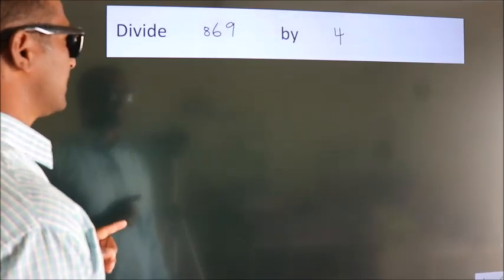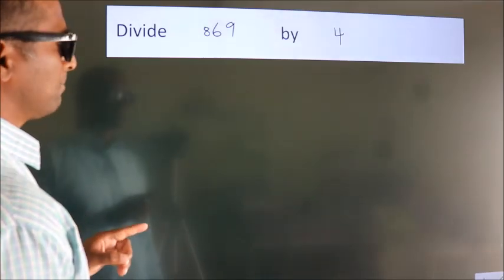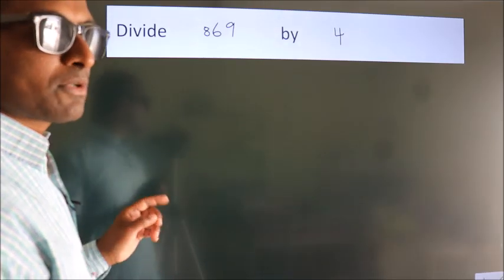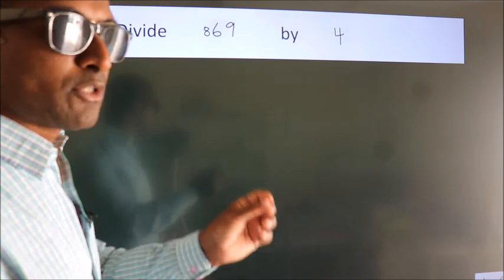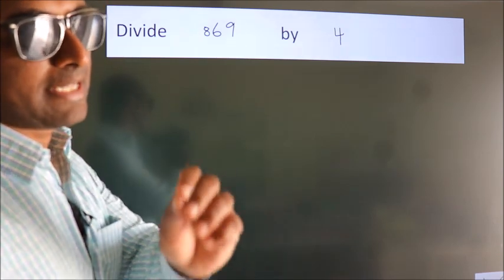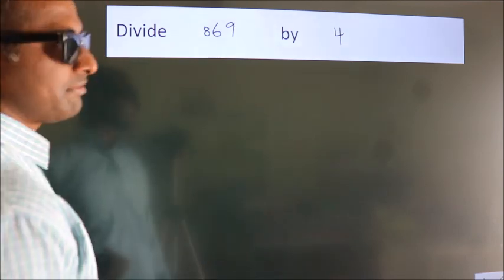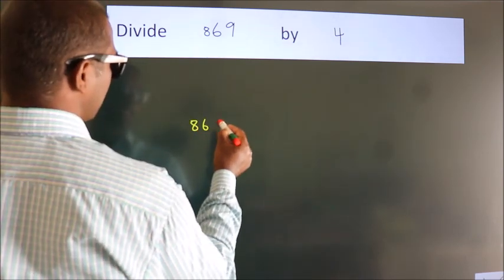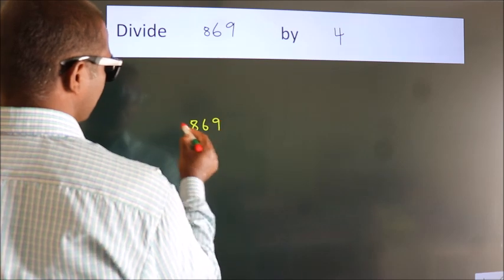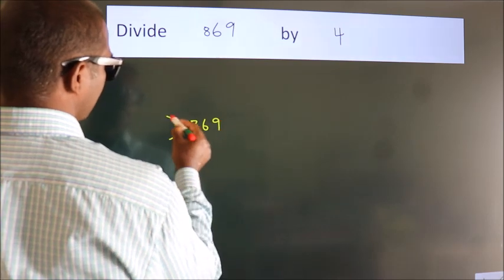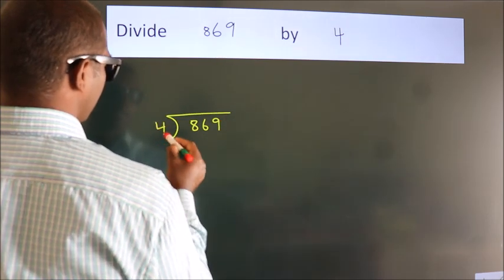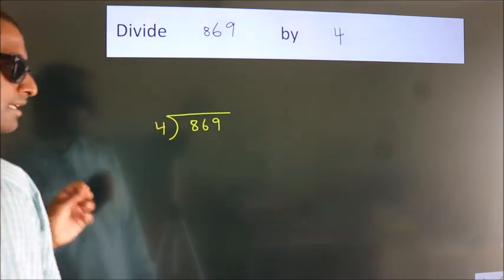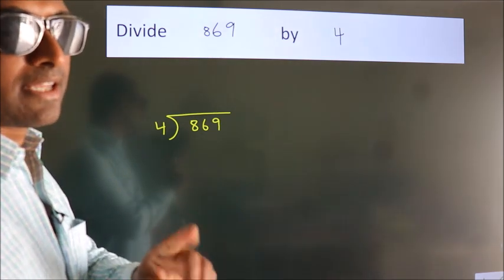Divide 869 by 4. To do this division, we should frame it in this way: 869 here, 4 here. This is your step 1.